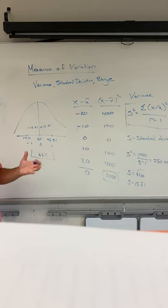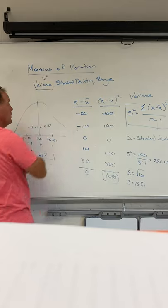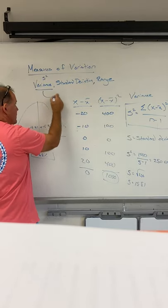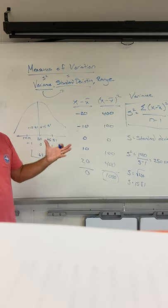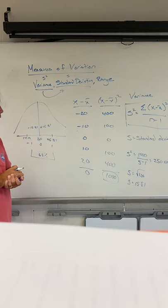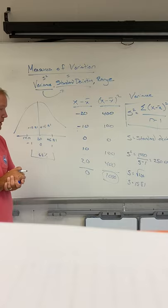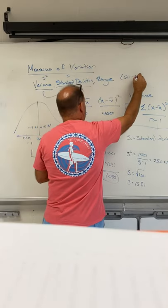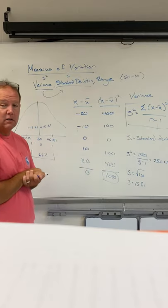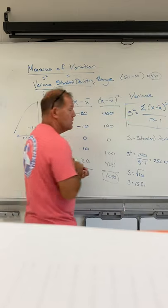When we talk about measures of variation, the variance, the symbol uses S squared. And that's really what we're doing to try to figure out the standard deviation. How much is my data spread? The range is the easiest of the values. The range is just the highest value minus the lowest value. So in this particular problem, the highest price of paint was $50. The lowest price of paint was $10. So the range is $40.